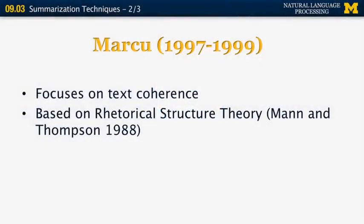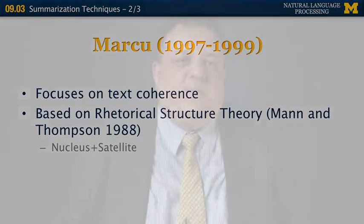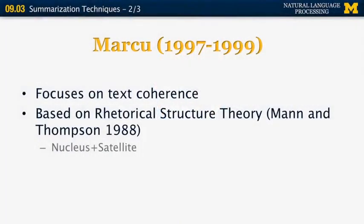That work was by Daniel Marcu as part of his PhD thesis at the University of Toronto and later at ISI in the late 90s. His approach for summarization is based on text coherence, specifically the rhetorical structure theory by Mann and Thompson from 1988. Rhetorical structure theory establishes connections between adjacent sentences which have some rhetorical connection. For example, 'I like cats. They make me feel happy.' The second sentence gives additional information about why I like cats. In rhetorical structure theory, these relationships are called rhetorical relations, consisting of a nucleus and a satellite — the nucleus is the important piece and the satellite is the optional piece.